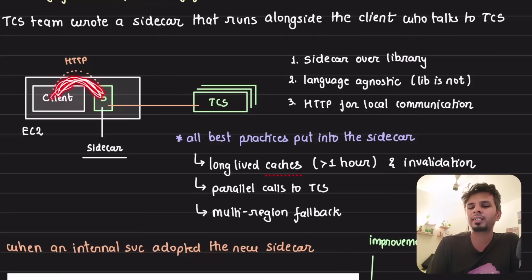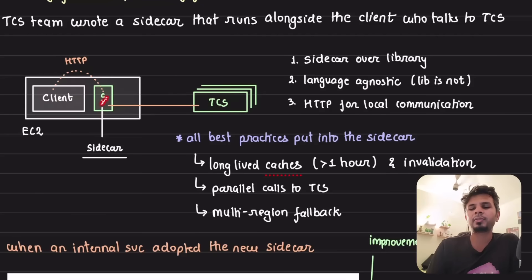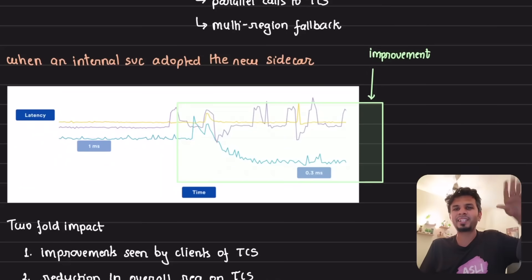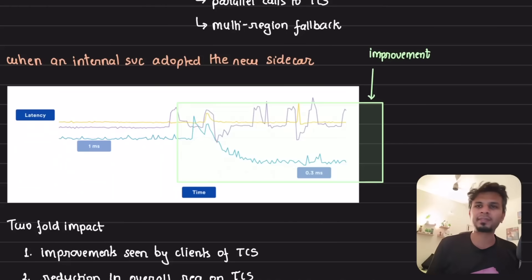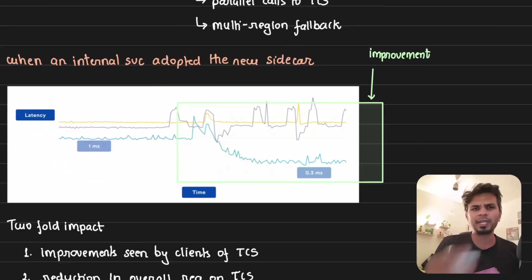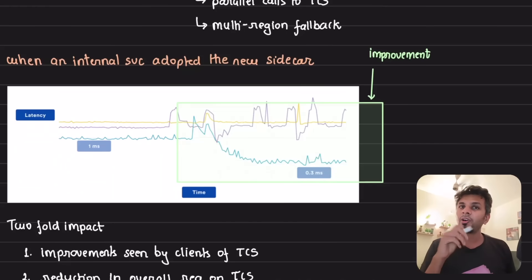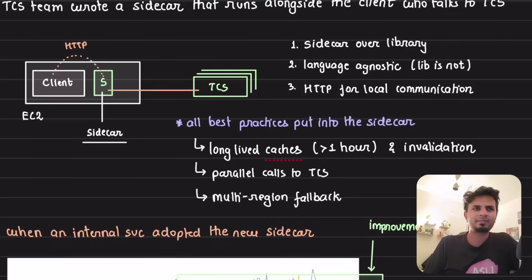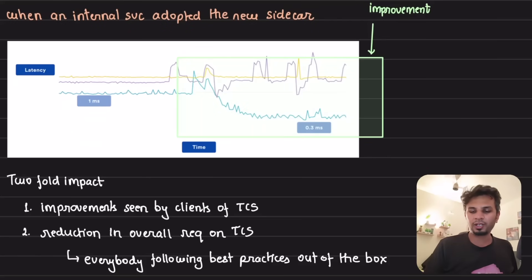When they rolled the sidecar out to internal services, even teams that already followed best practices saw a benefit — from one millisecond P90/P99 down to 0.3 milliseconds. There was still scope for improvement even for teams that had followed best practices. With that, they got two big impacts: first, improvements seen by all clients because best practices are now followed by everyone.